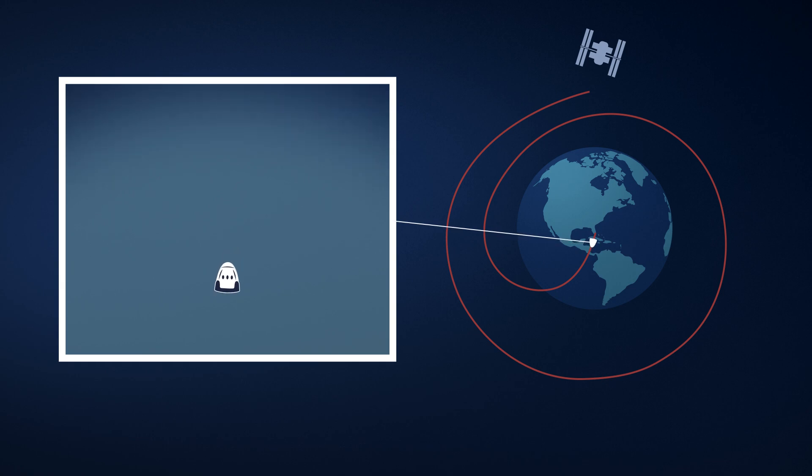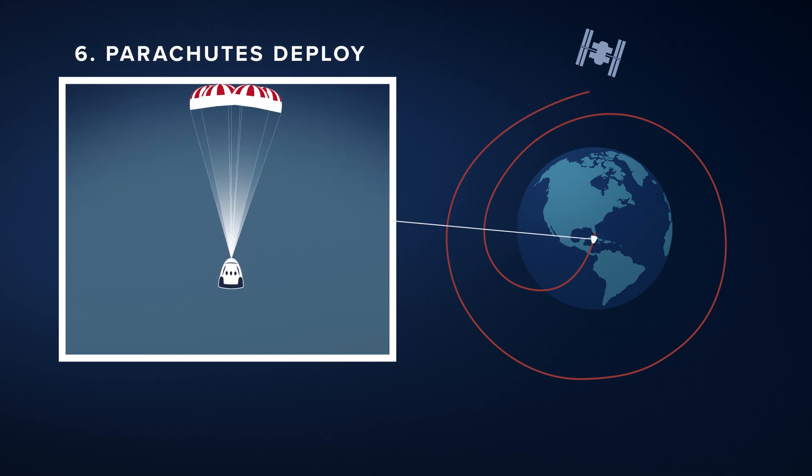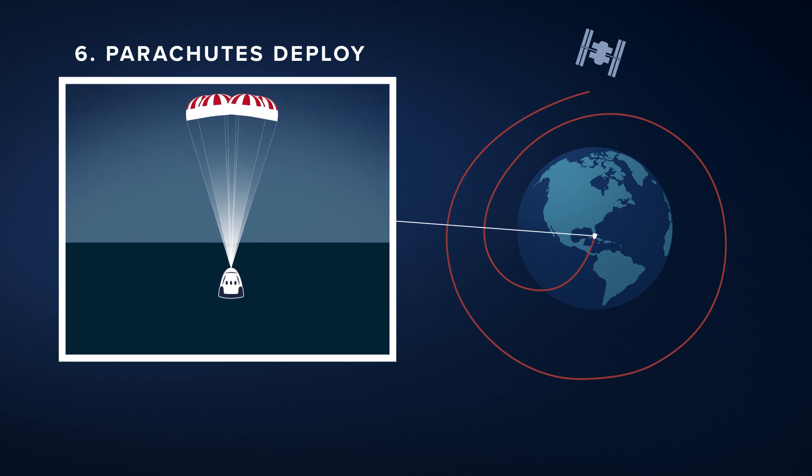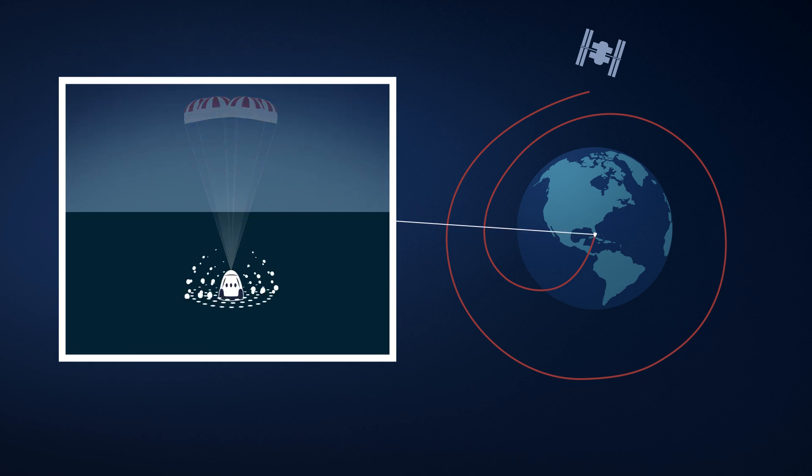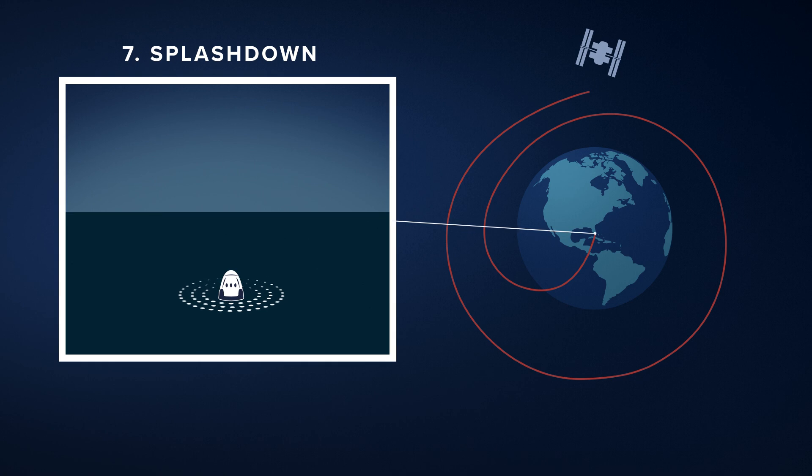After this fiery stage of re-entry, four Mark III parachutes will deploy, doing the final part to slow Crew Dragon down ahead of a gentle splashdown somewhere off the coast of Florida.